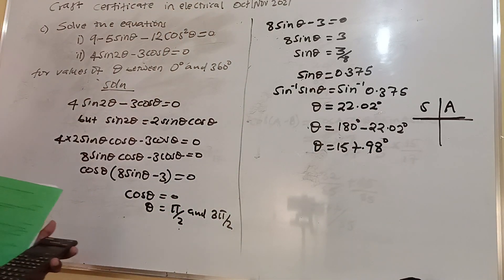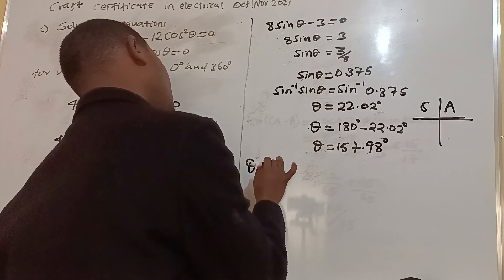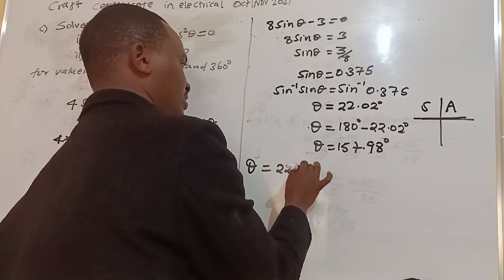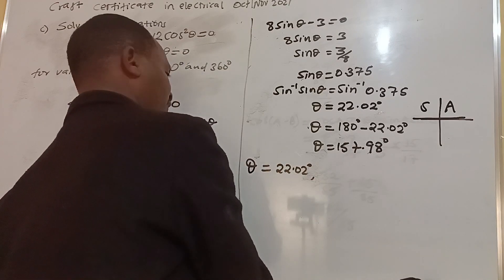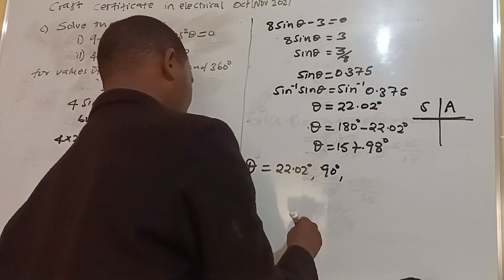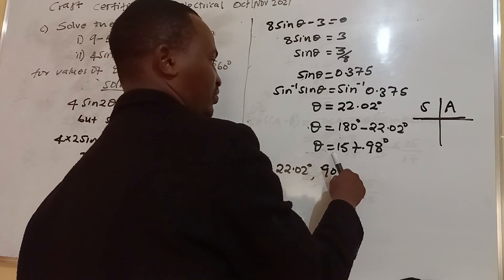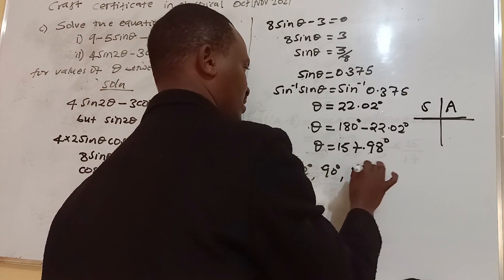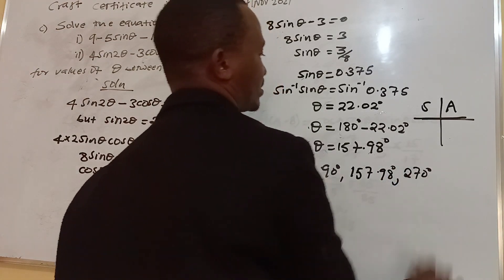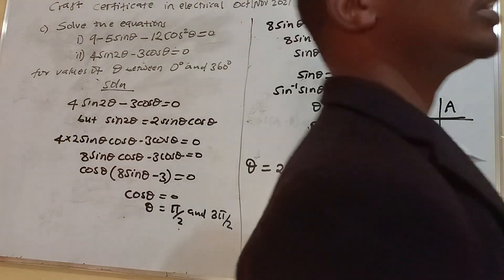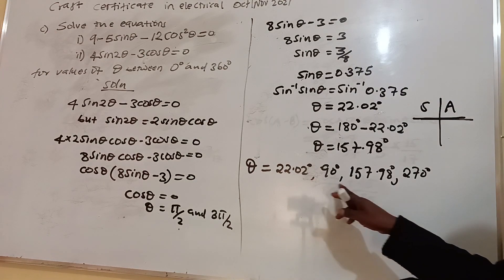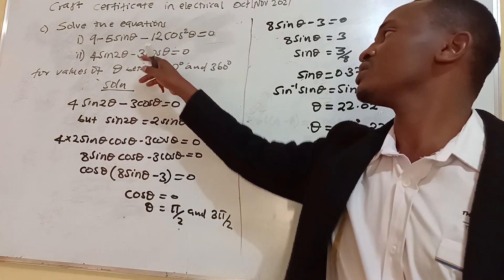So we have four answers in total. Starting from the smallest: θ equals 22.02 degrees, then 90 degrees (which is π/2), then 157.98 degrees, and then 270 degrees (which is 3π/2). All these angles satisfy the equation between 0 and 360 degrees. That is it.